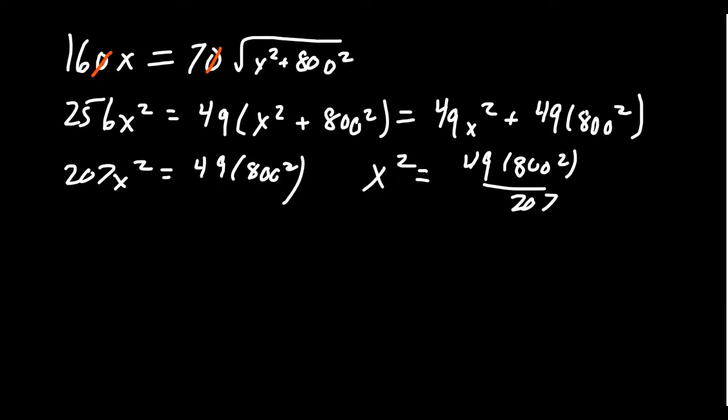And so then if we take the square root, you can see my laziness has paid off. x = 7 times 800—I never needed to know what 800² was—over the square root of 207.